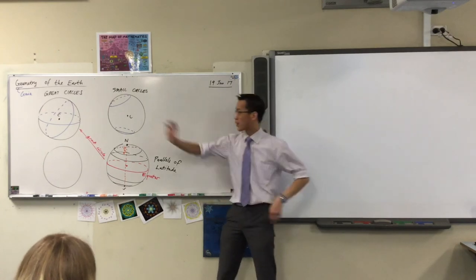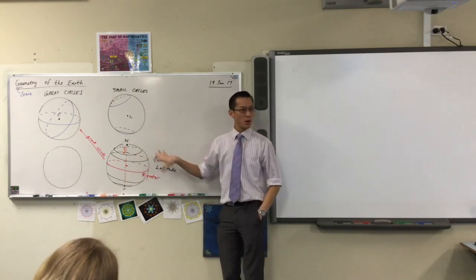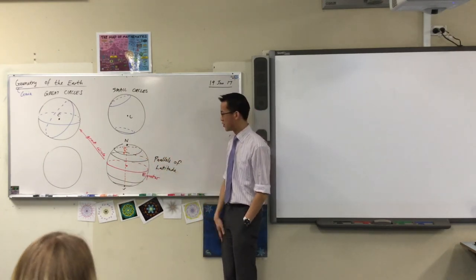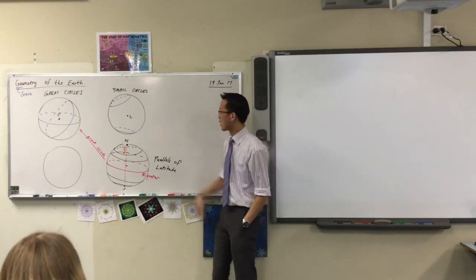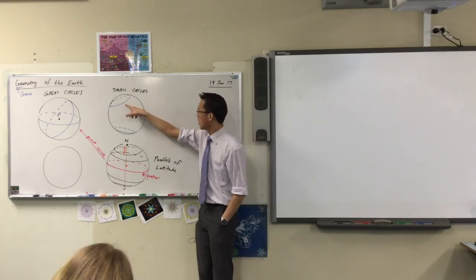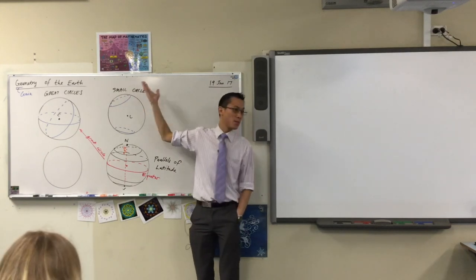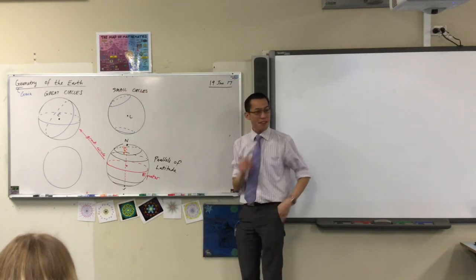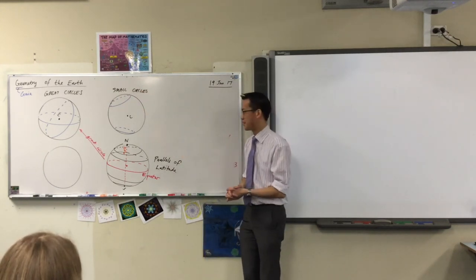Okay, so we've got great circles, small circles. These are the small circles that we're primarily interested in, that you can draw lots of other ones. For example, this is not a parallel latitude, but it's a small circle still.